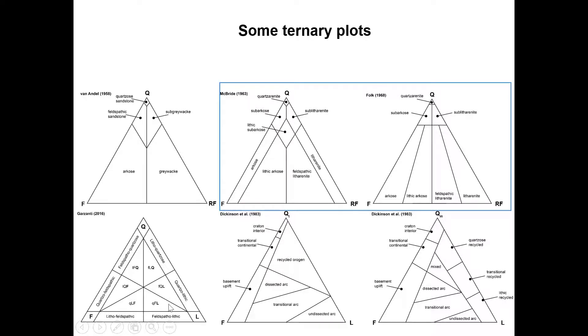For example, the feldspar-rich sandstone would be called feldspathic sandstone. A quartz-rich sandstone, quartzose sandstone, and a lithic-rich sandstone would be called lithic sandstone. Everything in between would be named according to the relative frequency of the three groups, for example, feldspatho-lithic or litho-feldspathic sandstone.